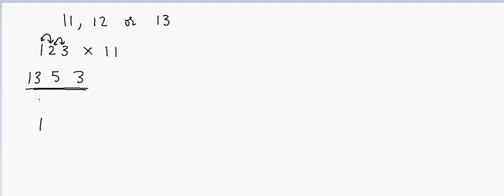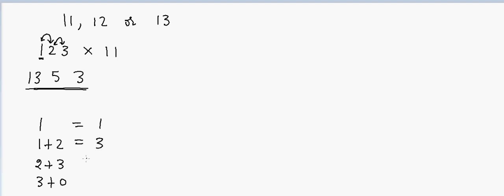How did I do this? My first digit is the same as the first digit of the original number. My second digit is 1 plus 2 — first digit plus second digit. My third digit is second digit plus third digit, and the last digit is the last digit plus zero, because there's nothing left. So the answer is 1, 3, 5, 3.